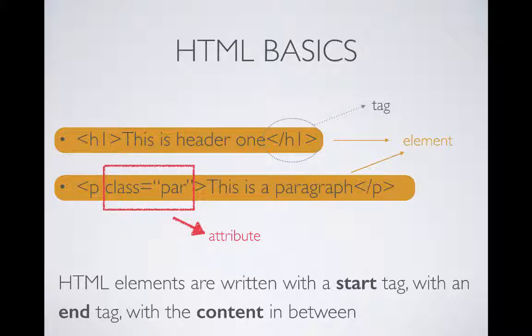Lastly, regarding attributes — an attribute is just some text in the start tag that states a variable and its value. Some common attributes are class and ID, which are used heavily for CSS.